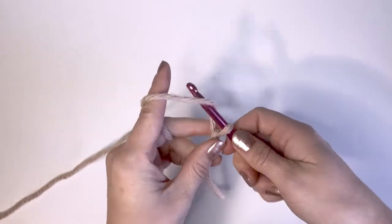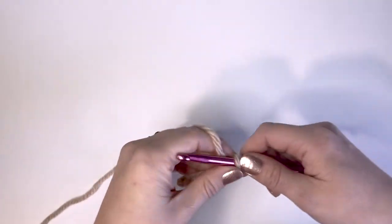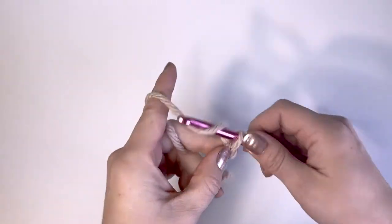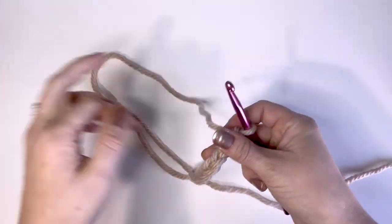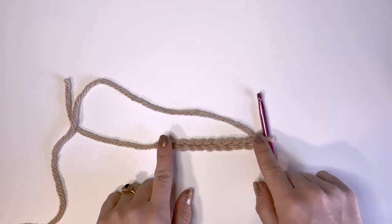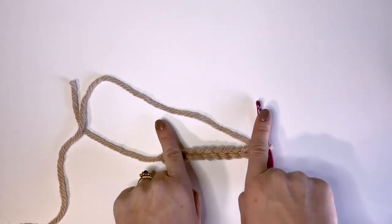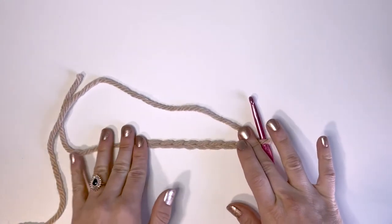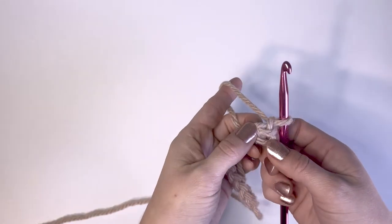Let's chain 11. So one, two, three, four, five, six, seven, eight, nine, ten, eleven. And when I use a chain to start my projects, when I'm crocheting in rows, I like to do it pretty loose because that will prevent your project from being narrow and too tight at the bottom and then kind of growing outward. So it's okay to do these a little extra loose, a little bit looser than you think. And then all we're going to do is crochet back the other direction.